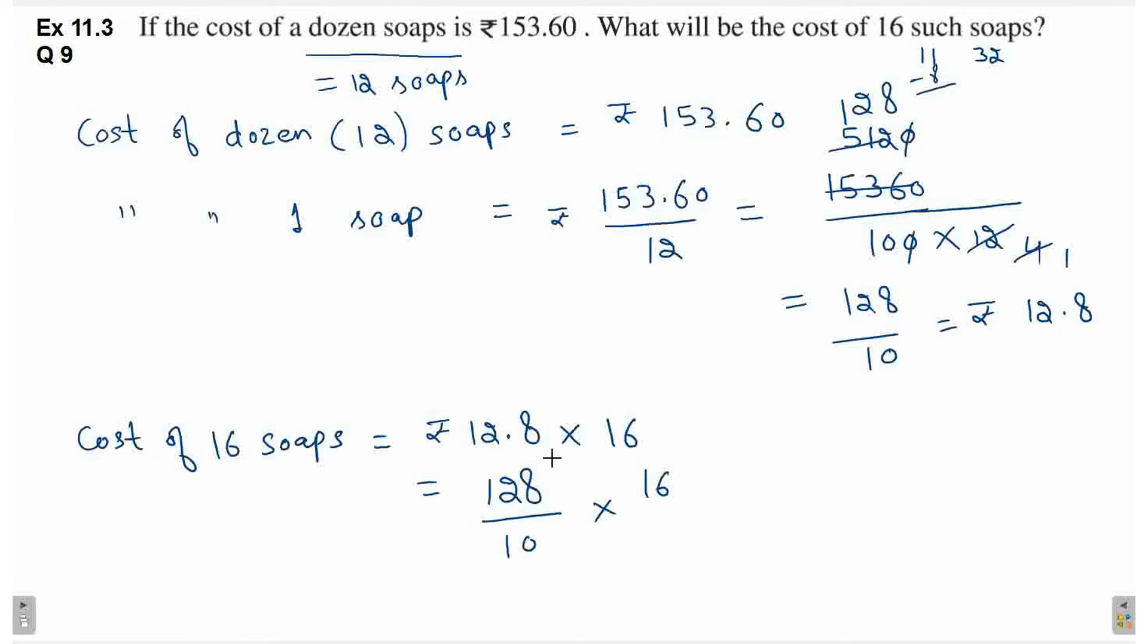Ya phir aap isko pehle 2 ke saat divide bhi kar sakte ho. 2, 5s are 10. 2, 6s are 12. 2, 4s are 8. Ab aap 64 ko 16 ke saat multiply kar lo. 64 multiply by 16 is equal to...